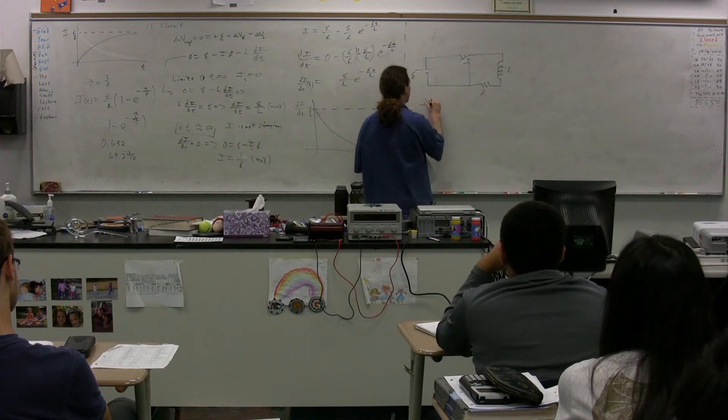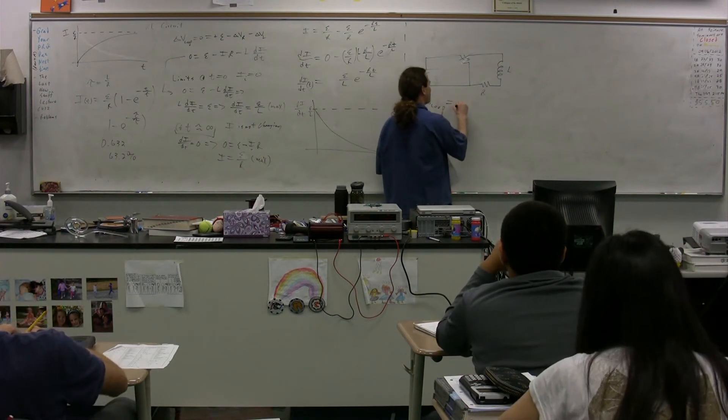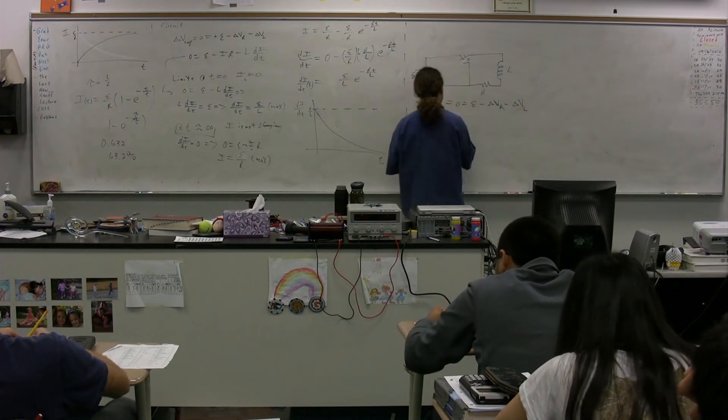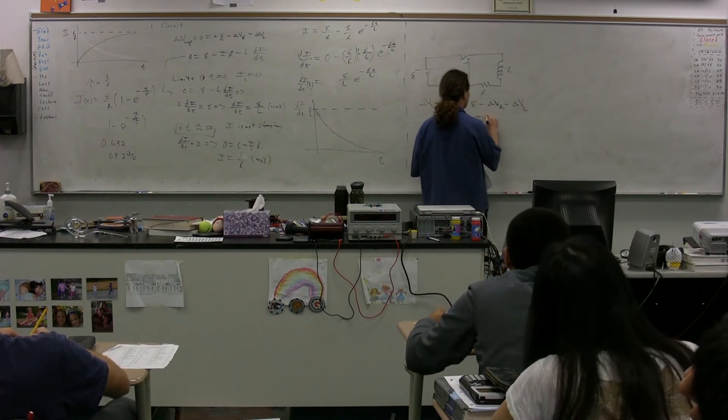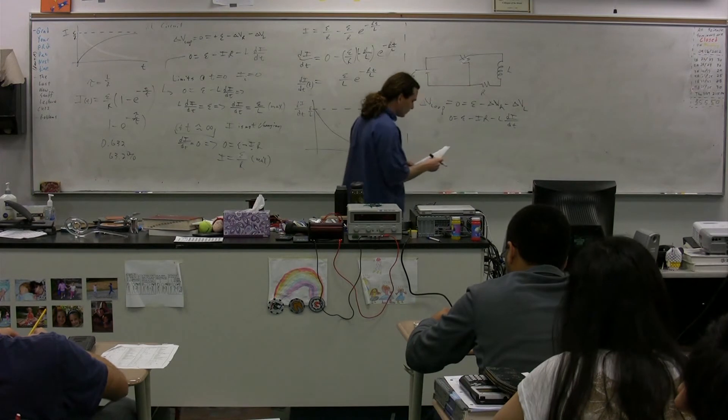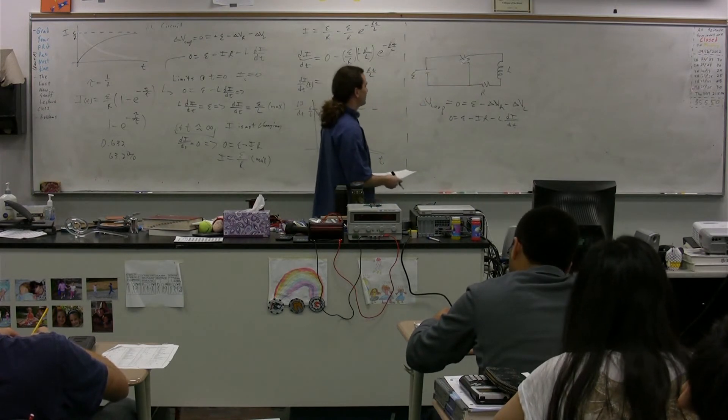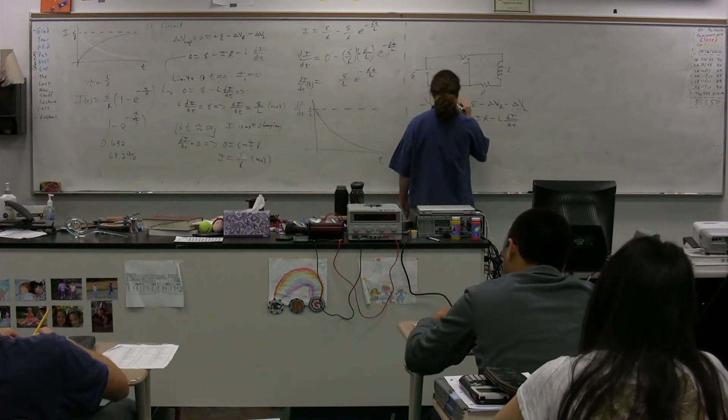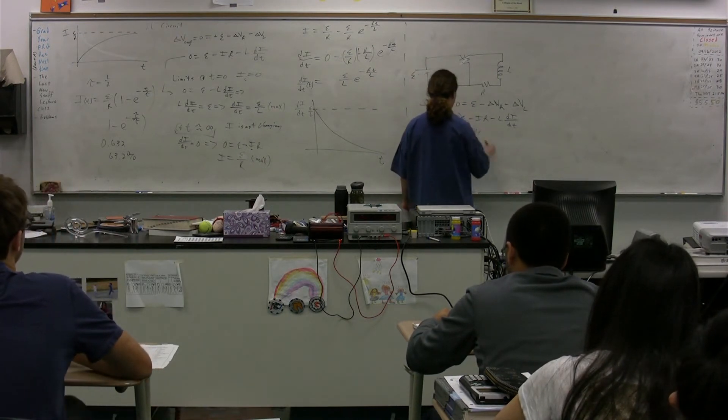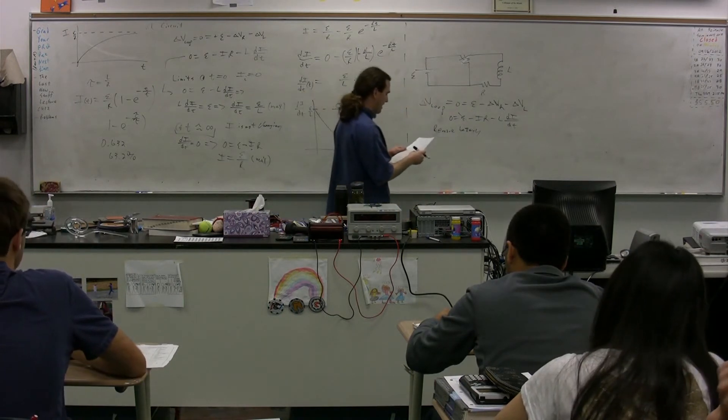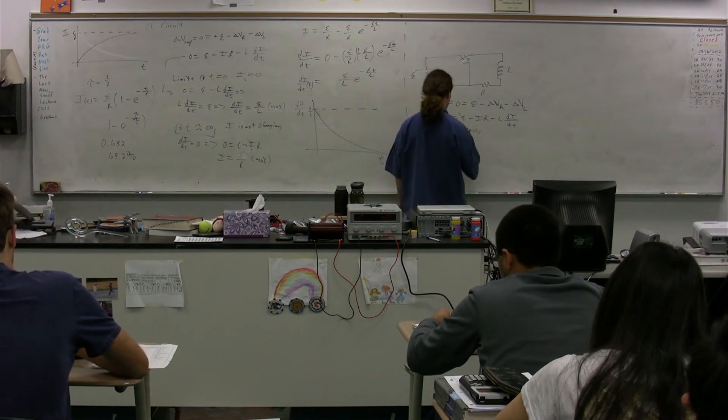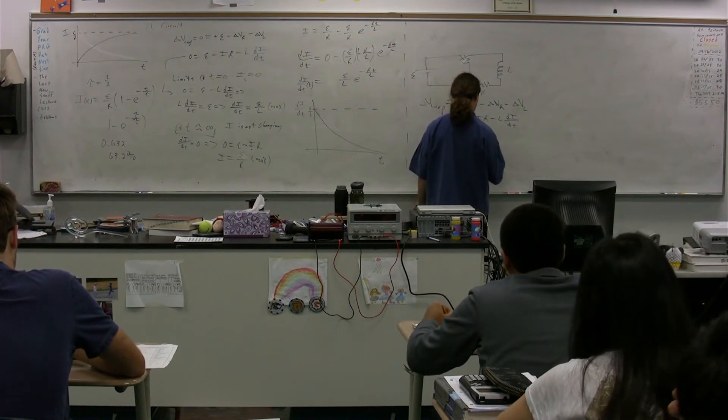So again, we have the electric potential difference around the loop. This is identical to what we had before. Zero is equal to the EMF minus the electric potential difference across the resistor minus the electric potential difference across the inductor. Zero is equal to the EMF minus the current times resistance minus L, the inductance, times dI/dt. Well, we've removed the battery. So we remove the battery. That's gone. We now have that if we bring current times resistance over there, our current times resistance is equal to negative L dI/dt.